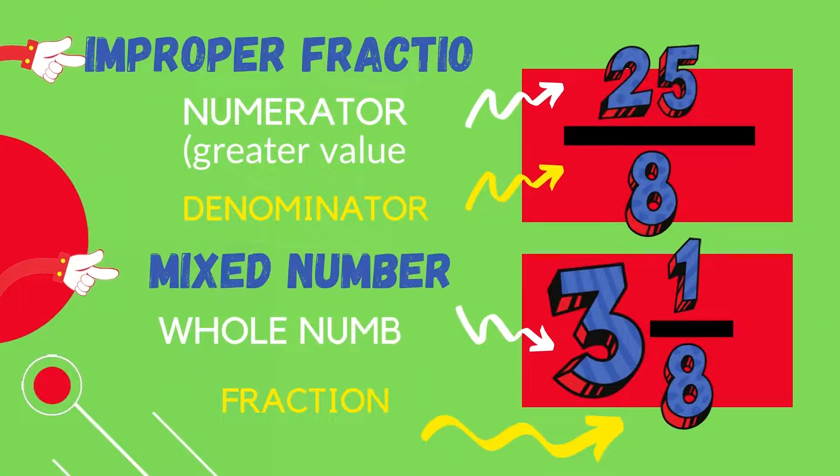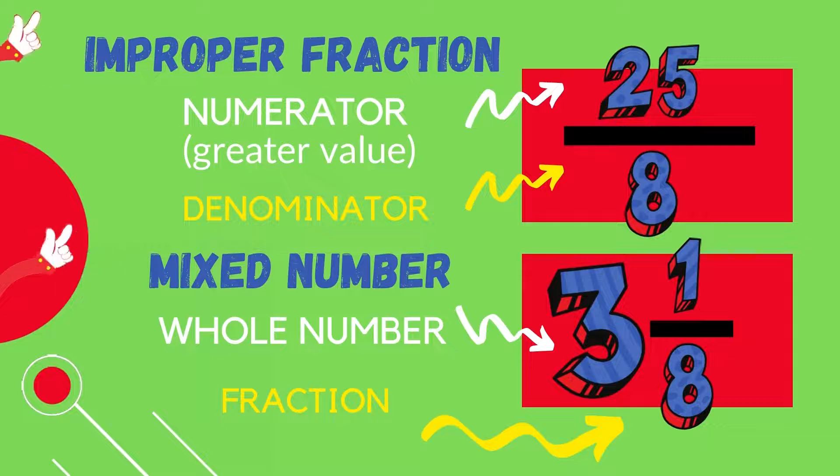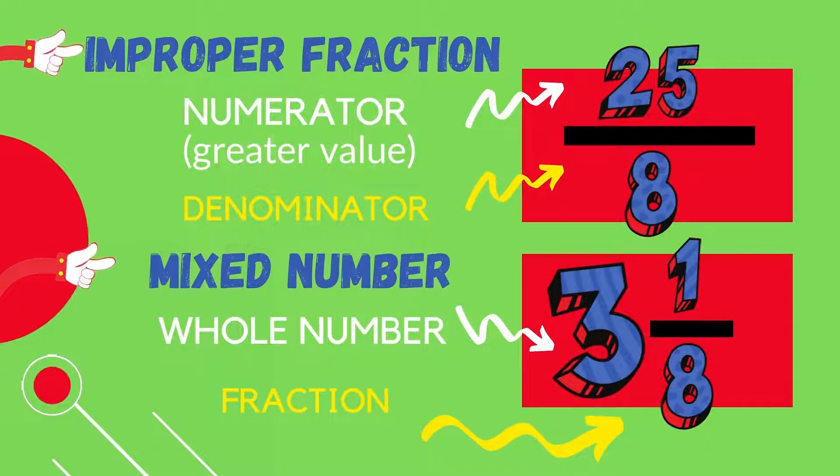In this video we will be converting improper fractions to mixed fractions. A reminder: an improper fraction is where the numerator is top heavy, meaning the numerator or top part of the fraction has a greater value than the denominator or bottom part. In comparison, a mixed number is made up of a whole number, like three in this example, and a fraction, like one-eighth.